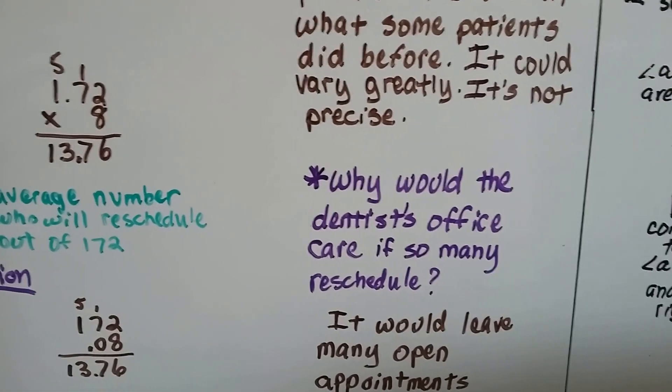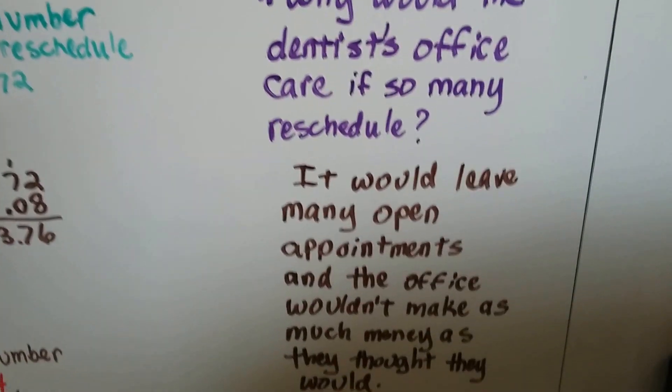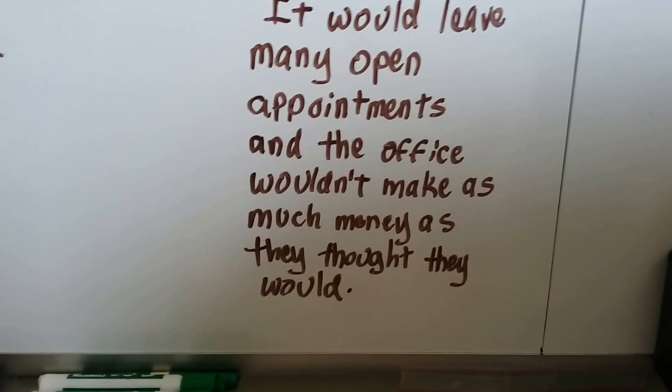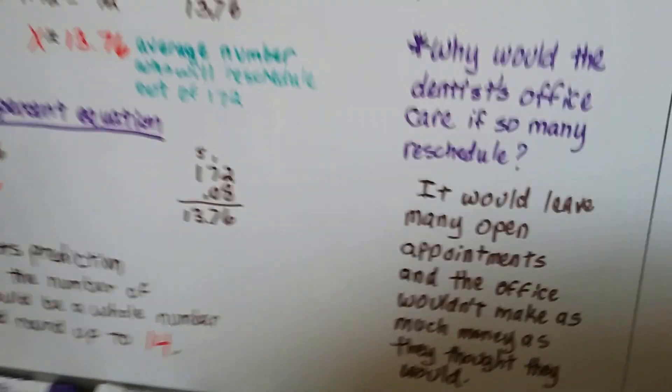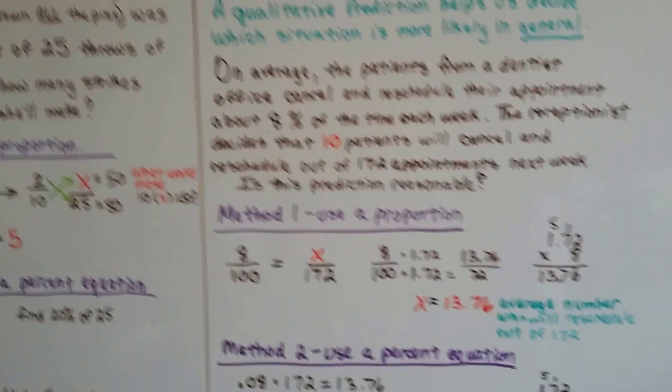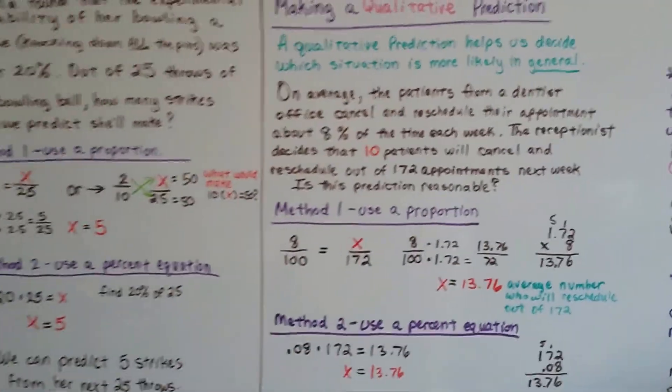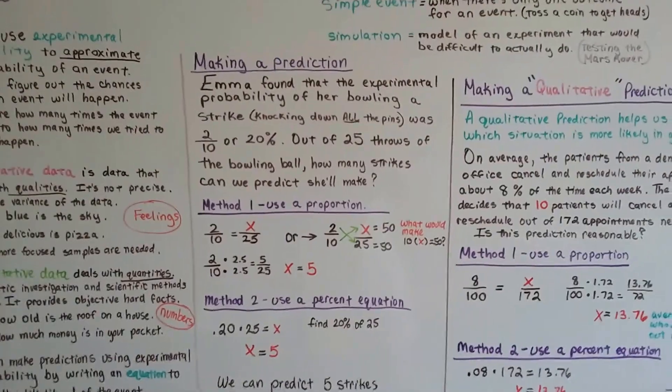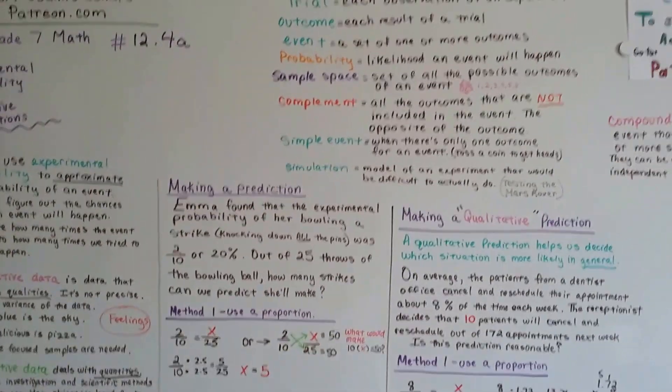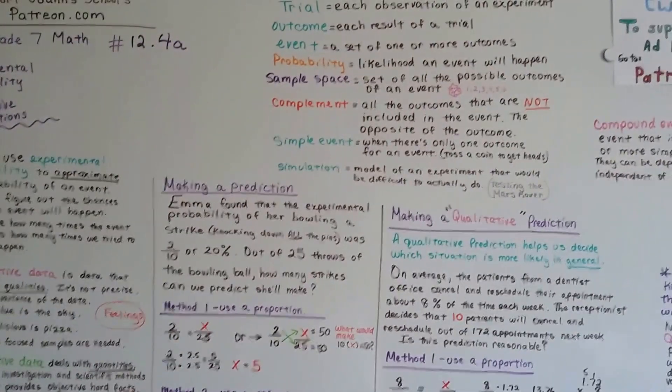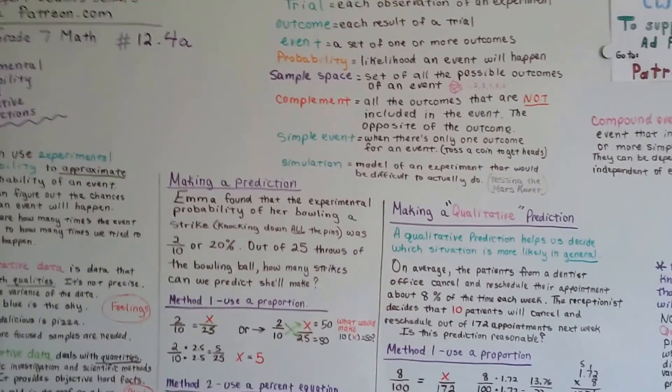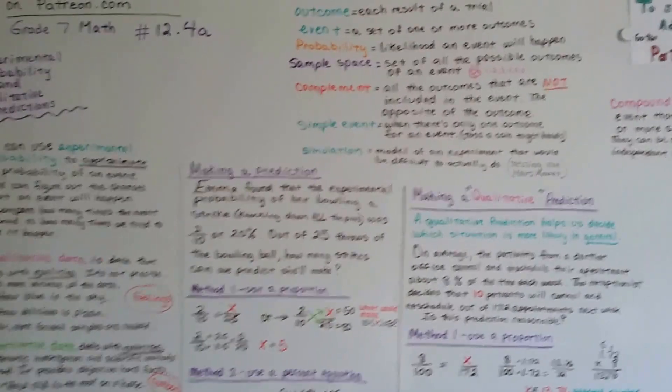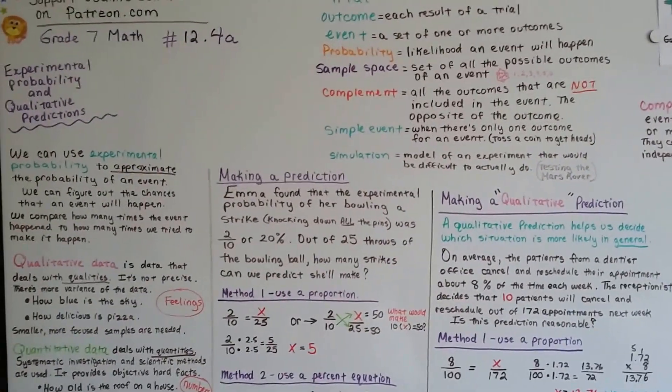Now, why would a dentist's office care if so many reschedule? Well, it would leave many open appointments, and the office wouldn't make as much money as they thought they would. What if it was a beauty salon, and the beauty salon was really trying to pay their rent, and they saw all the bookings they had for haircuts, and perms, and hair color, and they said, oh, with all these appointments, we're going to be able to pay our rent. And then a bunch of people canceled. Then they wouldn't make their rent, would they? So, it would be important to a business to know this information.